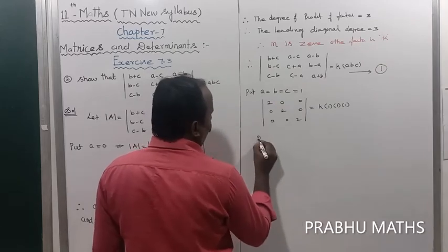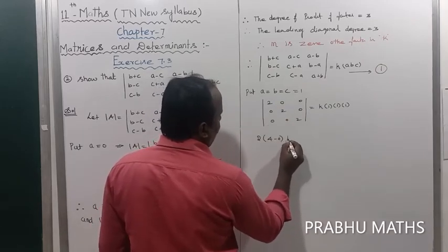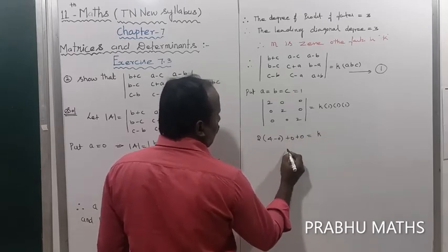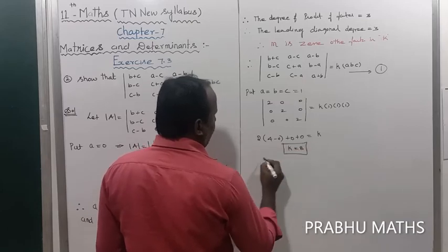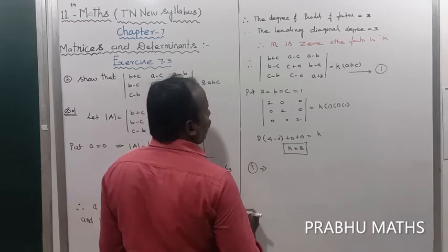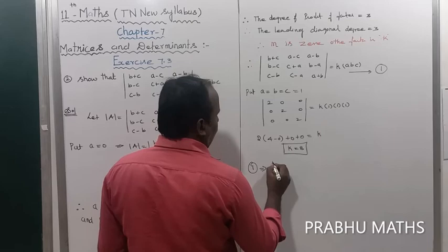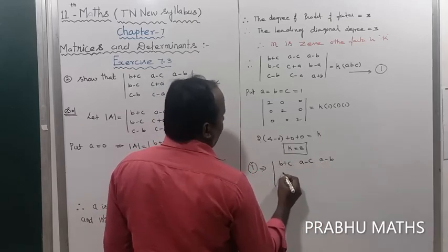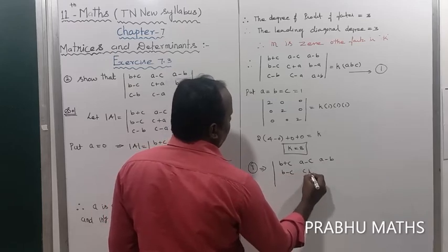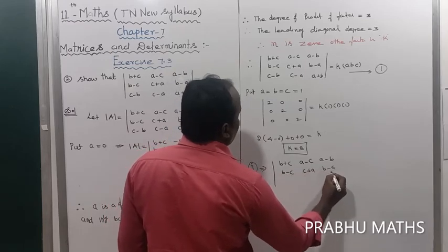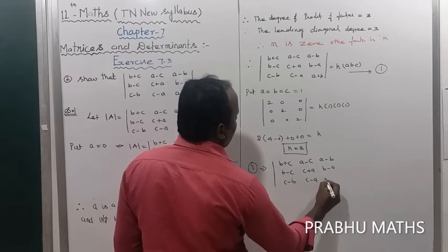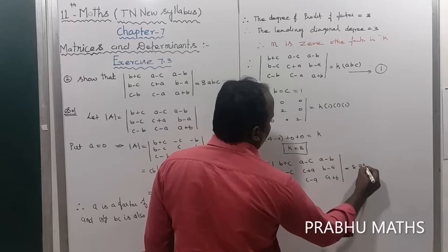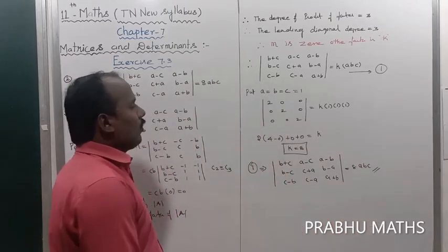Computing the determinant: 2 times (4 minus 0) minus 0 minus 0 equals 8, so K equals 8. Therefore the determinant of b plus c, a minus c, a minus b, b minus c, c plus a, b minus a, c minus b, c minus a, a plus b equals 8abc.